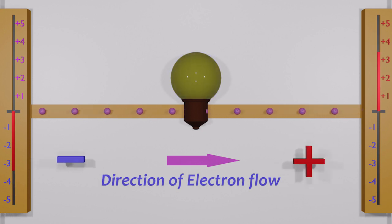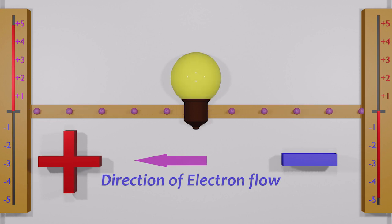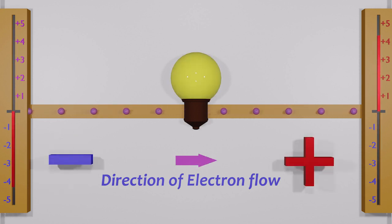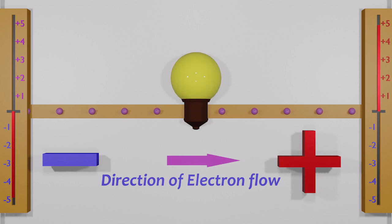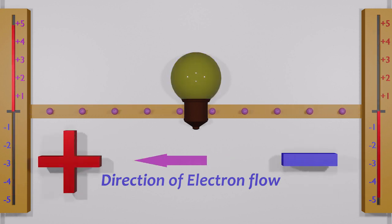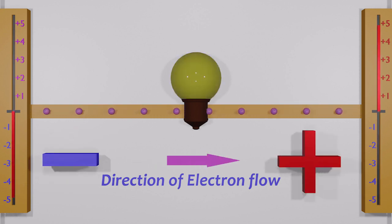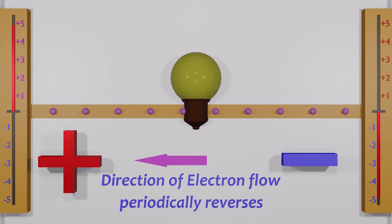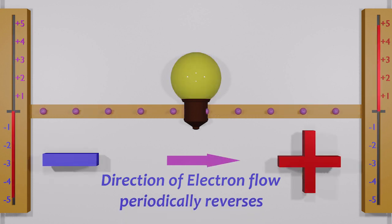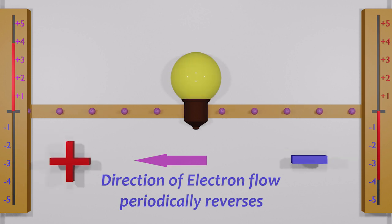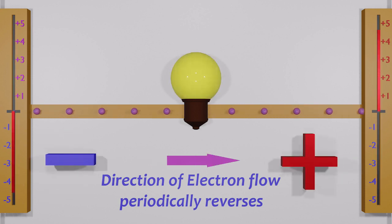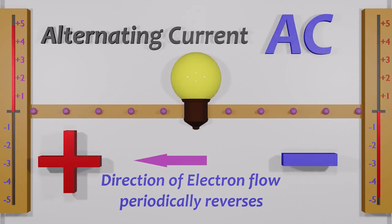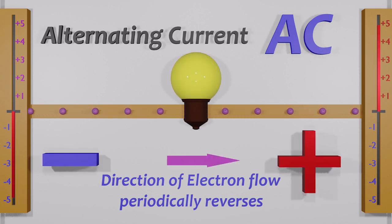Let's change the polarity again. Again. And again. Let's do it more frequently. Electrons are moving back and forth. They are alternating. This kind of electron flow can be known as an alternating electron flow. An alternating current.